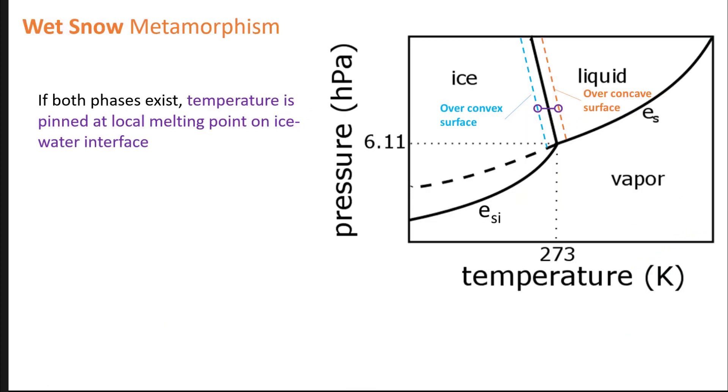We need to go back to our phase diagram for water. We have the pressure-temperature or PT phase diagram with solid, liquid, and vapor phases. We have the liquidus line. E sub s represents the saturation vapor pressure over liquid, and E sub si is the saturation vapor pressure over ice. Once you introduce some liquid component into this system, as long as both liquid and solid are present, you're stuck at zero C. You're not any higher or lower, you're right at zero C. In phase equilibria we say the system is pinned. The temperature is pinned at the local melting point at that ice-water interface.